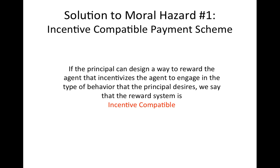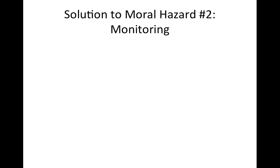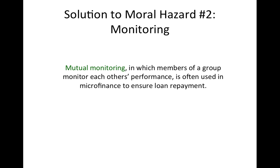One solution to the moral hazard problem is for the principal to design a reward system that incentivizes the agent to do what the principal wants. If the principal successfully designs a system that aligns the agent's incentives with the principal's desires, we say that the reward system is incentive-compatible. Sometimes designing an incentive-compatible reward system is easier said than done. In cases where it is not possible, another option is monitoring. One example of a monitoring scheme that can counter moral hazard is the mutual monitoring systems used by most microfinance organizations. This concludes this lesson on asymmetric information.